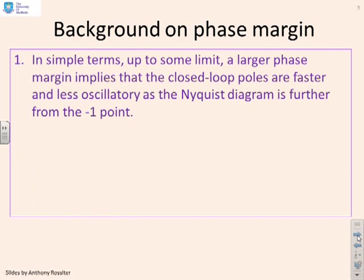Some background we need: up to some limit, a larger phase margin tends to imply that the closed-loop poles are faster and or less oscillatory, because the Nyquist diagram is further from the minus one point.